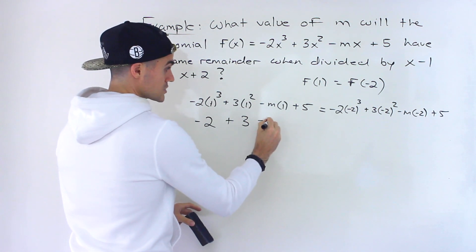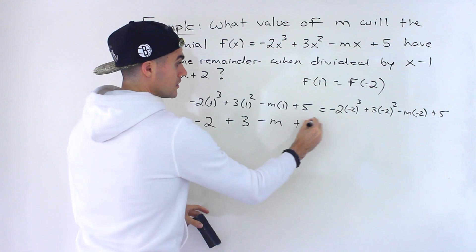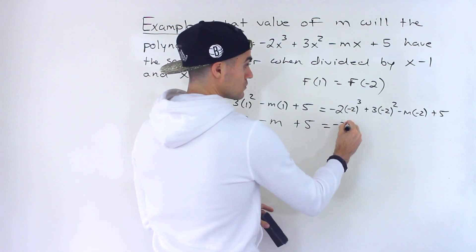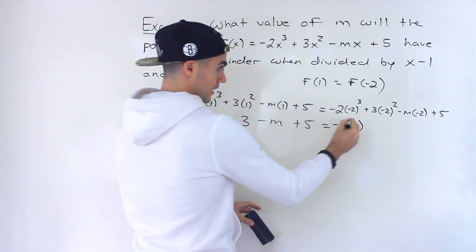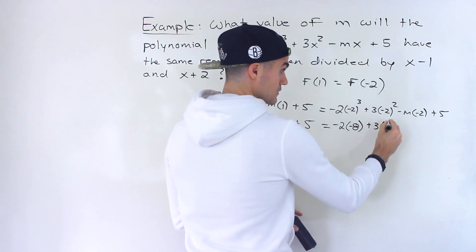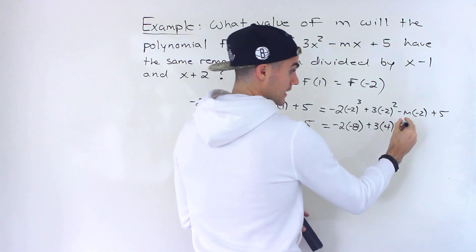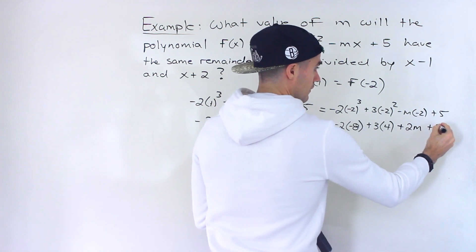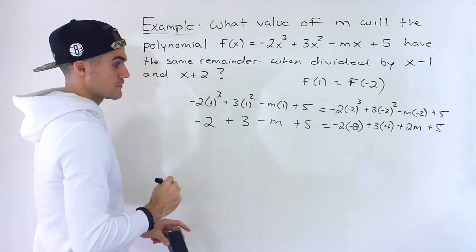Then we'll have -2. What's (-2)³? That's -8. Be careful with the signs here. (-2)² is positive 4. -2 times -m gives us positive 2m, and then we have + 5.